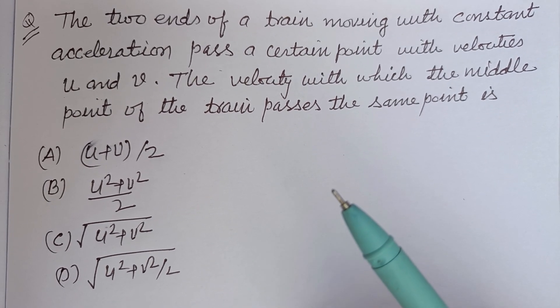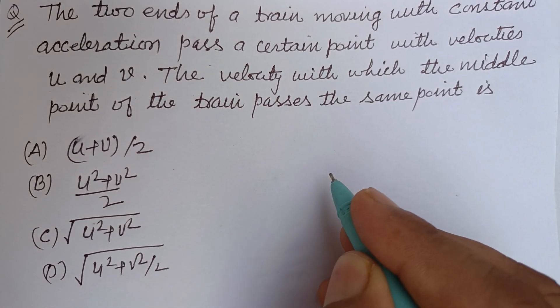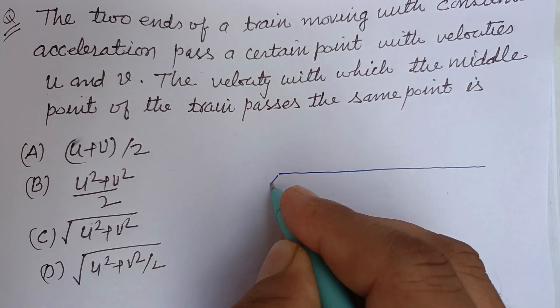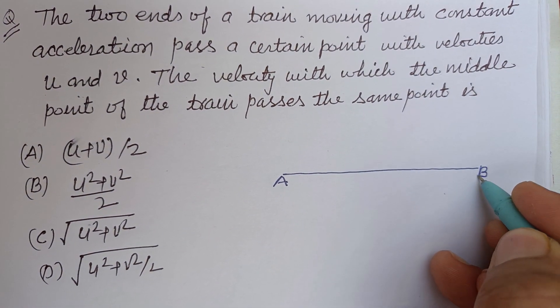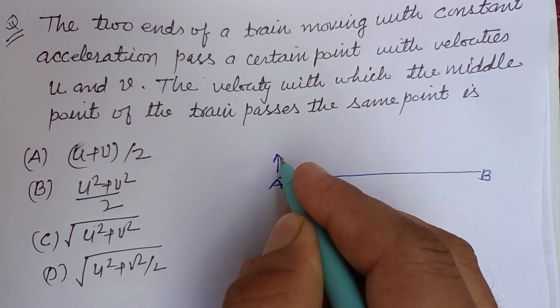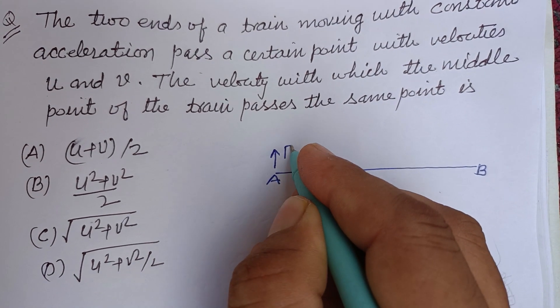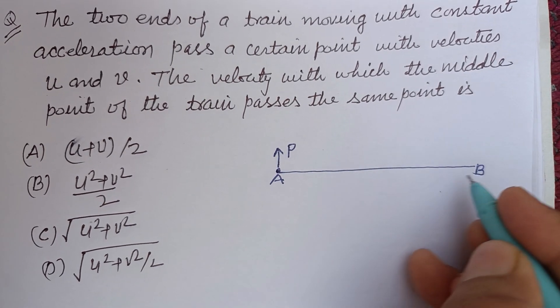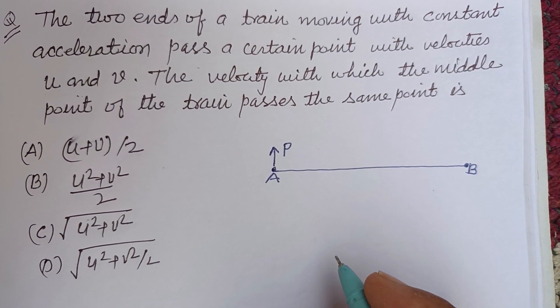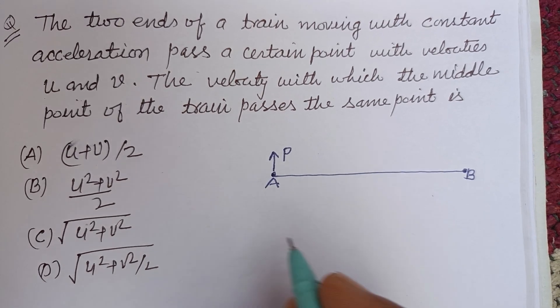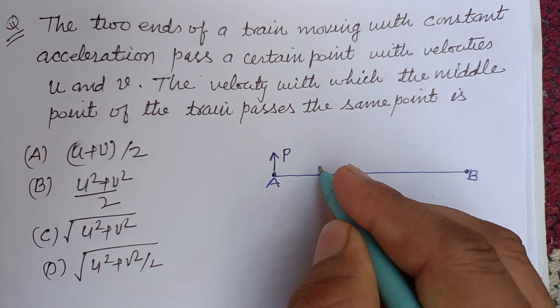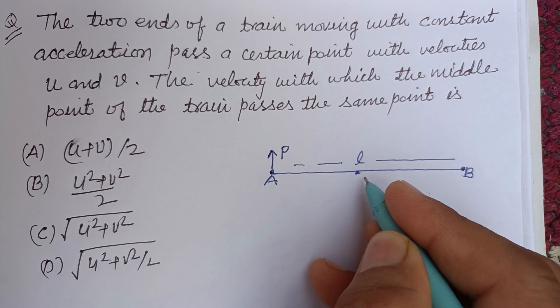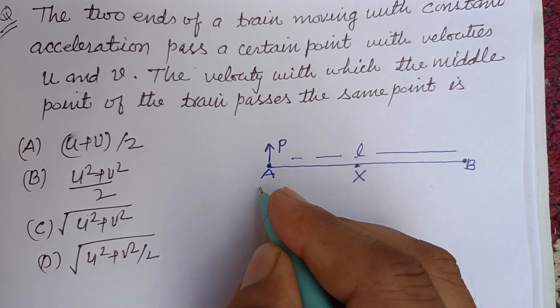So student, very interesting question. Let this be a train AB, and it passes a point. Let this point be P. This is the Indian and this is the last bogey of the train. Let the length of train be L and its midpoint is X.